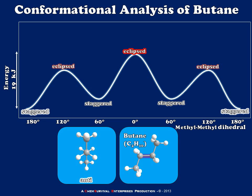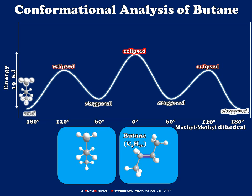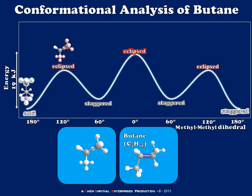The anti conformer is, of course, the lowest energy conformation possible because there's as much space as possible between the largest groups. A 60 degree rotation of the carbon-carbon bond leads me to my first eclipsed conformation. And you'll notice that although this is higher in energy than the anti conformation, it's not yet the highest energy conformer because my methyl groups are each eclipsing a hydrogen.